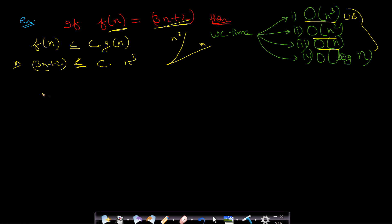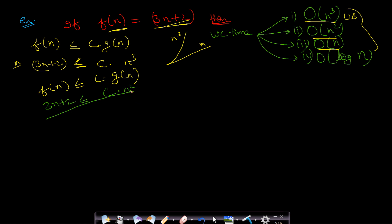For the second option: 3n + 2 ≤ c·n². By intuition, n² is greater than 3n + 2 for larger values of n, and whatever positive integer c may be, it will always be greater than the left-hand side. Therefore n² is also an upper bound of f(n) = 3n + 2. Since n² is lower than n³ but still encloses n, n² is closer to n than n³ is — so n² is tighter than n³.